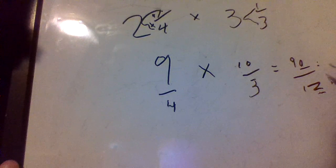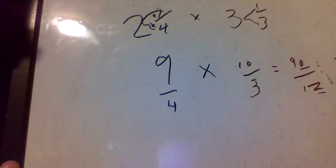So two by two on top and two on bottom. 90 divided by two is 45 and 12 divided by two is six.